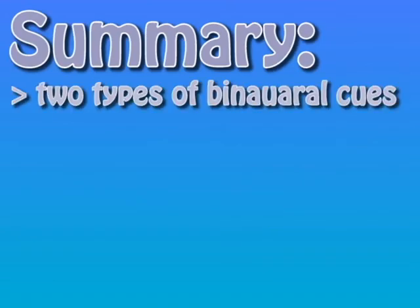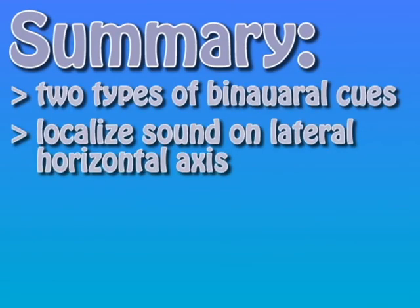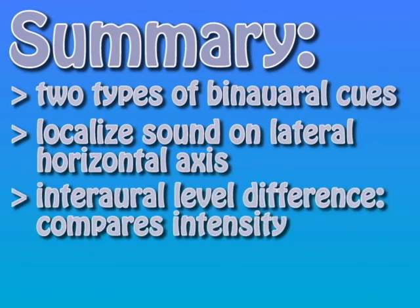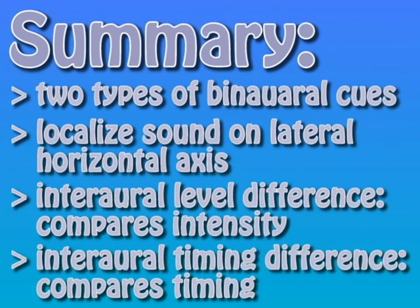As a summary, there are two types of binaural cues which are used to localize sound on a lateral horizontal axis. These binaural cues are called the interaural level difference, which compares the difference in intensity of the sound between each ear, and the interaural timing difference, which compares the difference in the timing of the sound between each ear.